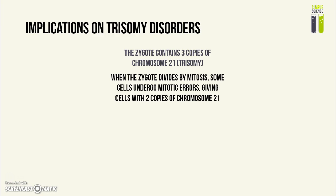When the zygote divides by mitosis, some cells will undergo normal mitosis without any errors, giving more cells with three copies of chromosome 21. However, some cells will undergo mitotic errors, which gives cells with only two copies of chromosome 21 — i.e., the normal number.